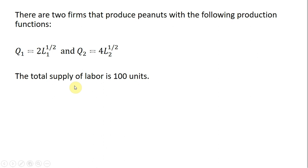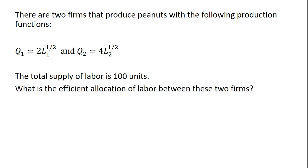We're going to assume that there is a total supply of labor equal to 100 units. And what we want to do is find the efficient allocation of labor between these two firms, the allocation that will maximize total output.